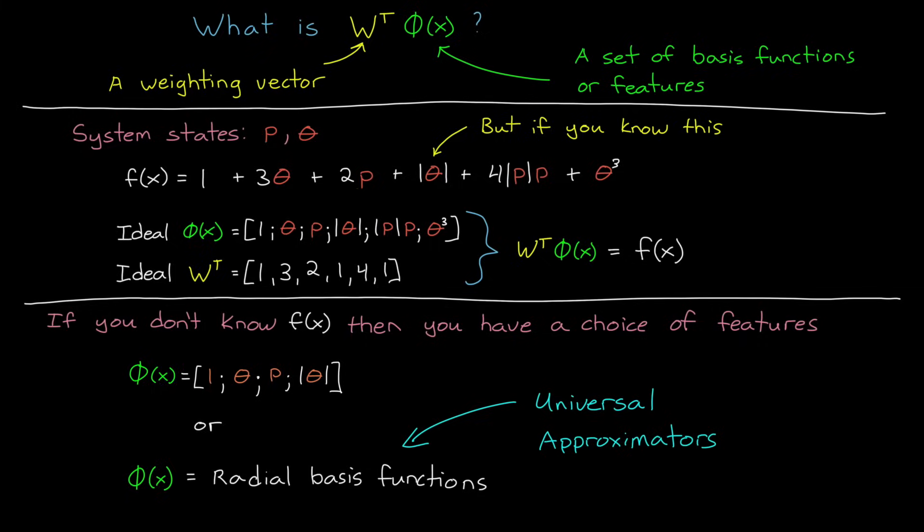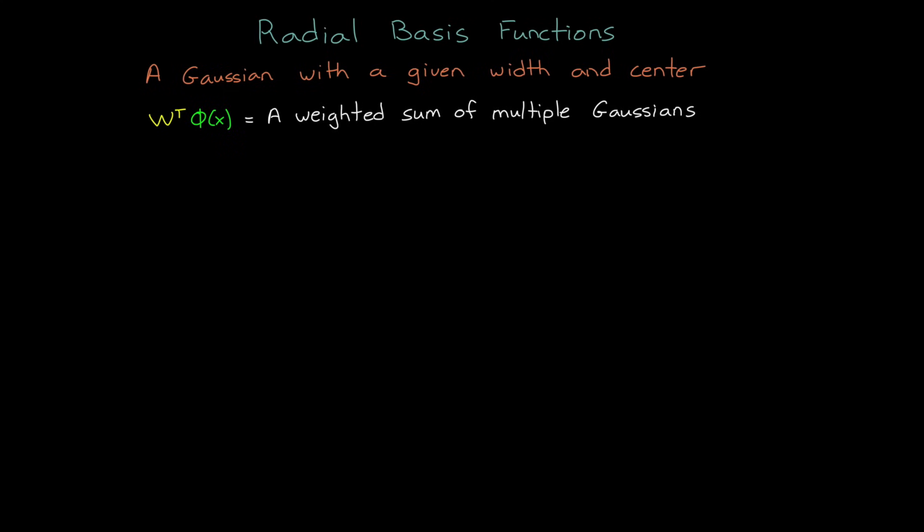Let's look at radial basis functions a little bit more so that you know how they work. There are several different shape radial basis functions, but for this example, we're going to focus on a Gaussian shape. Therefore, a radial basis function is essentially a Gaussian that has a given width and center. And if we have multiple Gaussian functions, we can build up a function approximation by scaling each one by a different weight and then summing them together.